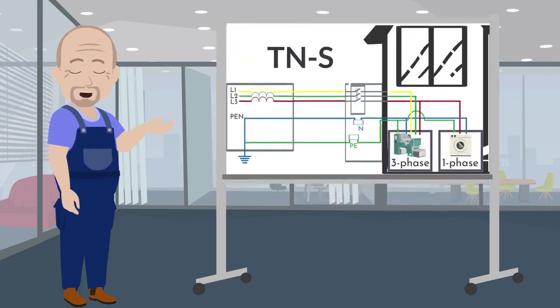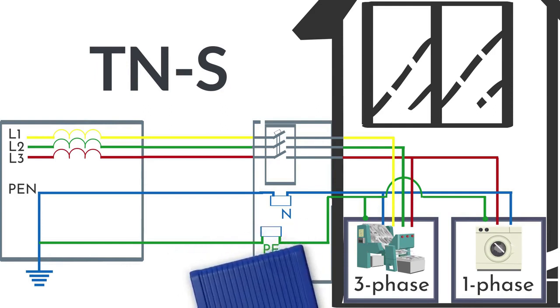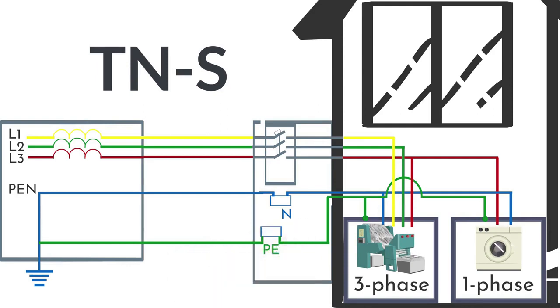Now let's talk about the TNS system. It is the safest power supply system, where zero protective and zero working conductors are separated along the whole length of the circuit, since the separation of two neutrals is carried out in the transformer substation. Three-phase voltage is supplied via five wires, while single-phase voltage is supplied by three wires.